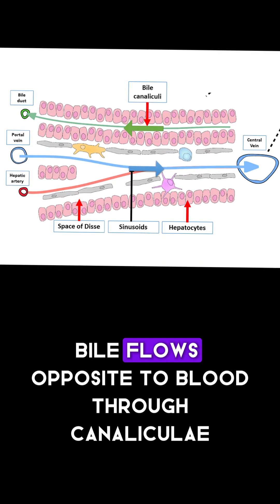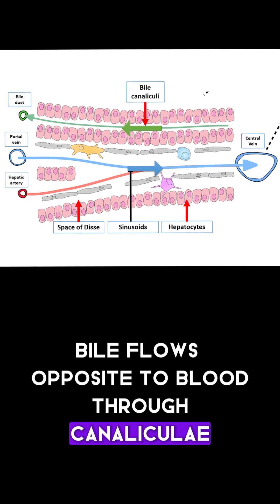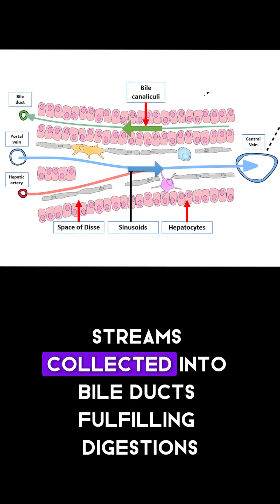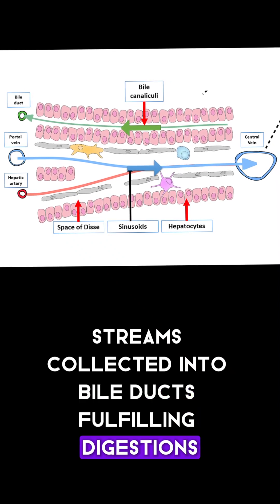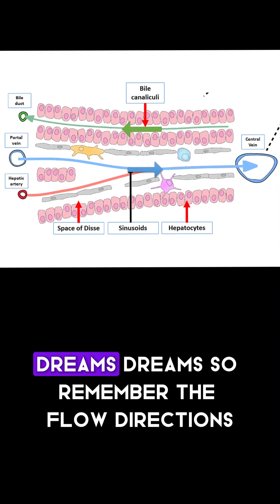Bile flows opposite to blood through canaliculi streams. Collected into bile ducts, fulfilling digestion streams.